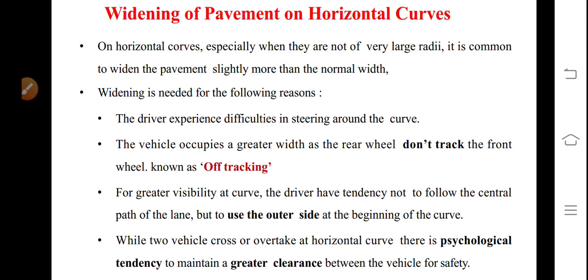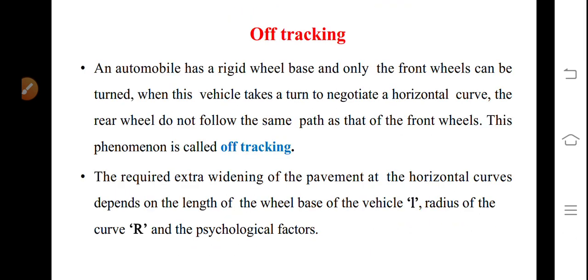There are two reasons for widening. First, because of the rigid wheel base — known as off-tracking — the rear wheels will not trace the path of the front wheels due to the rigidity of the wheel base connected to the vehicle. Second, psychological widening: drivers tend to occupy the outer edge of the pavement on a horizontal curve for safety, to see the oncoming vehicle quickly and apply brakes in time.